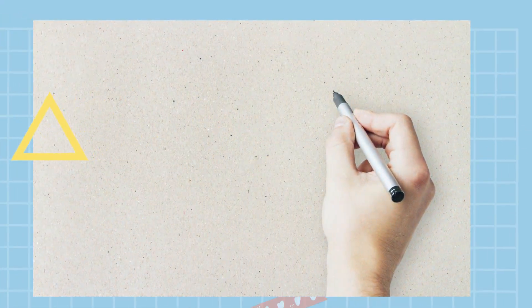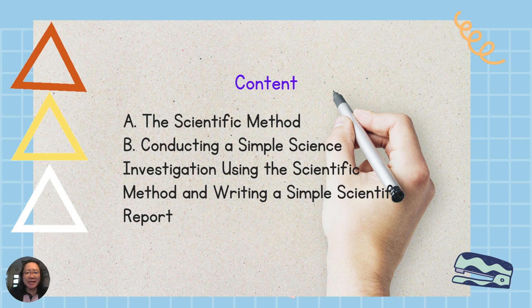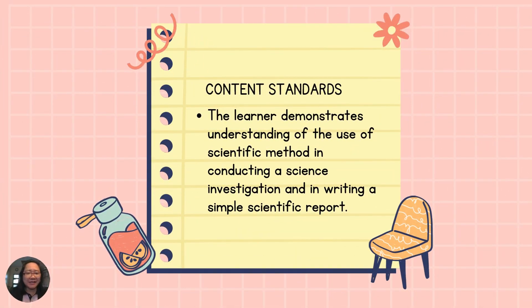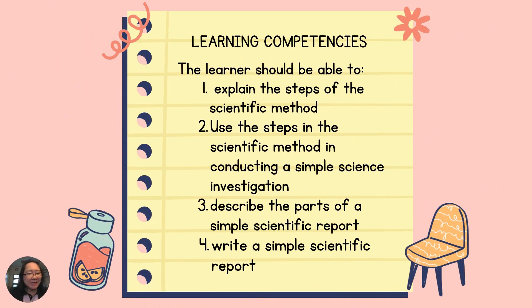For the fourth quarter, the content is the scientific method, including conducting a simple science investigation using the scientific method. Content Standards: The learner demonstrates understanding of the use of the scientific method in conducting a science investigation and in writing a simple scientific report. Performance Standards: The learner should be able to conduct a science investigation and write a simple scientific report. Learning Competencies: The learner should be able to explain the steps of the scientific method, use the steps in the scientific method in conducting a simple science investigation, describe the parts of a simple scientific report, and write a simple scientific report.